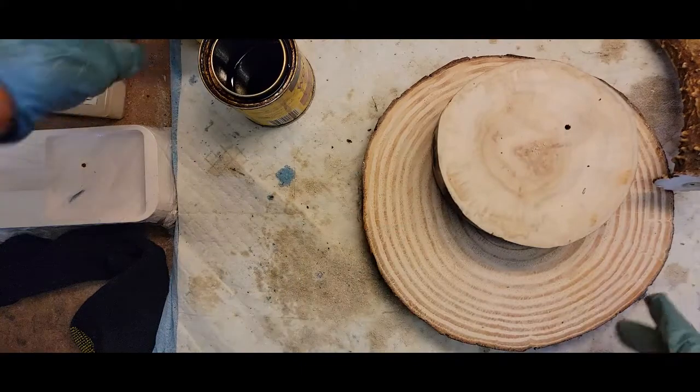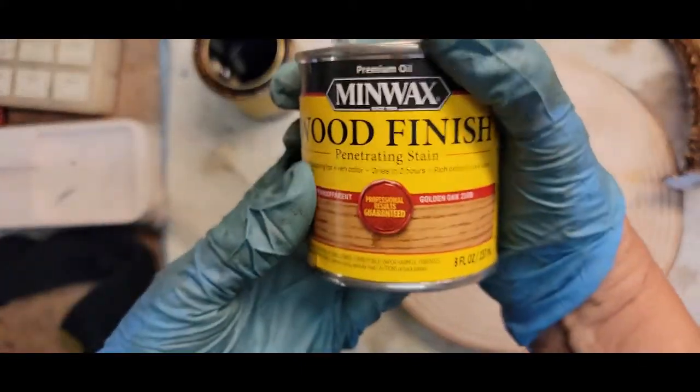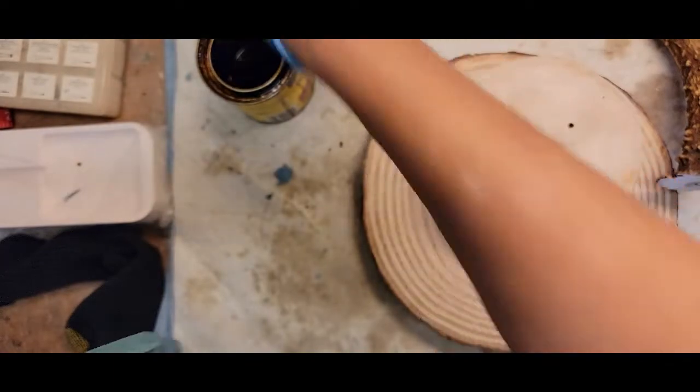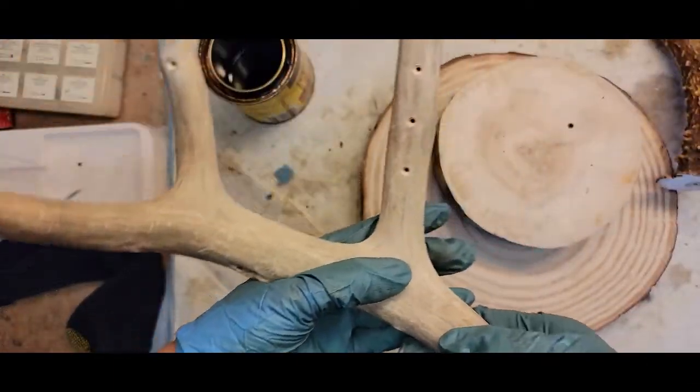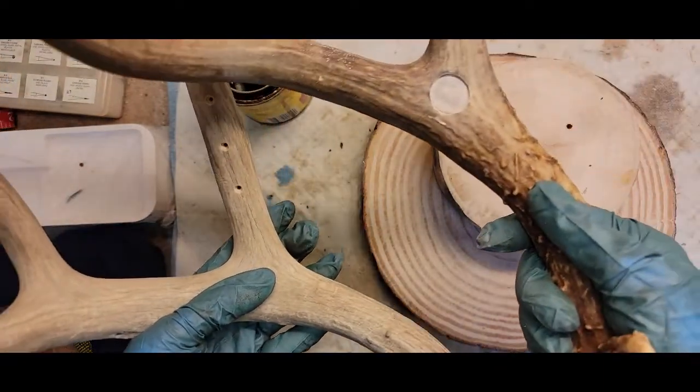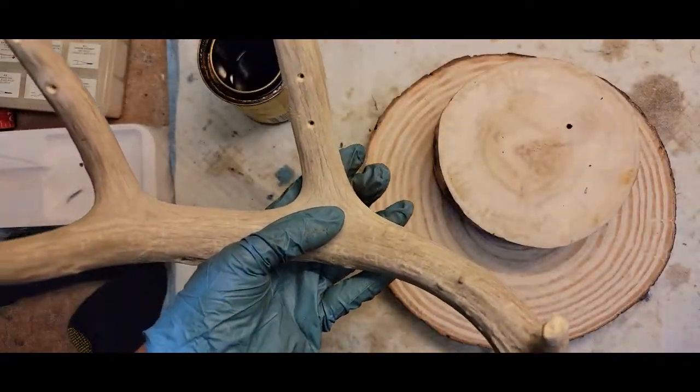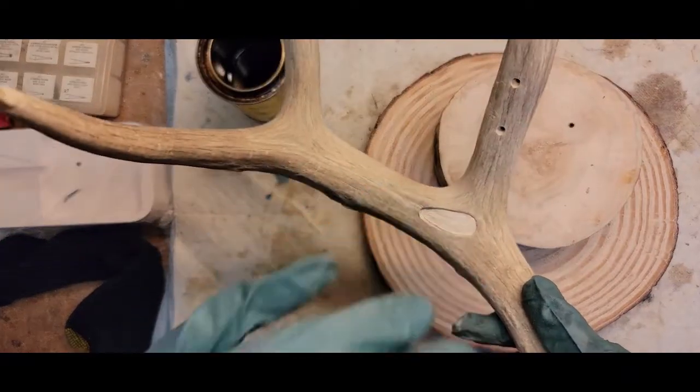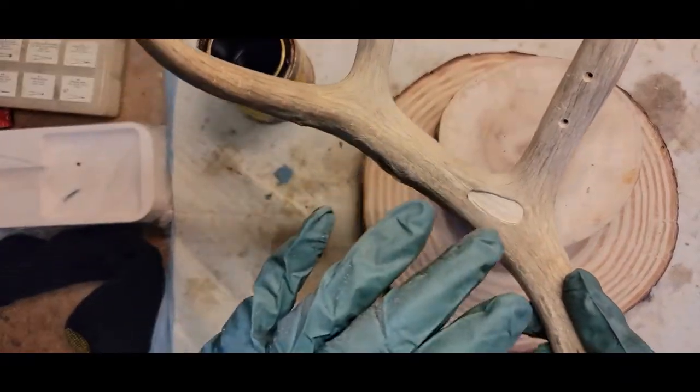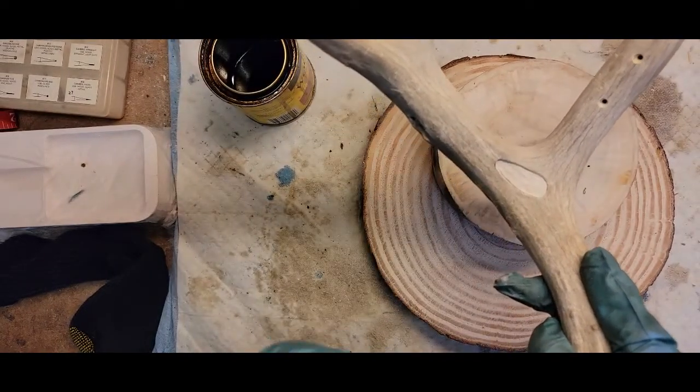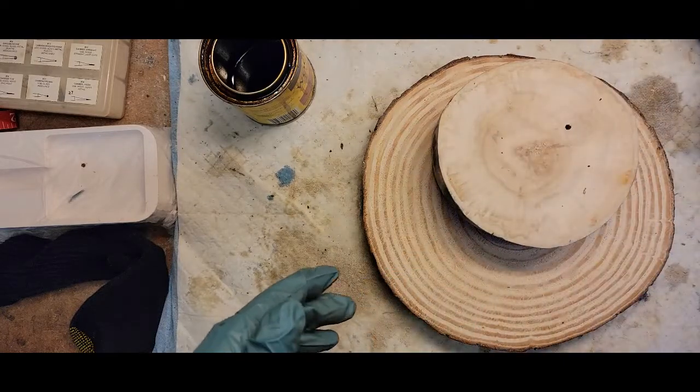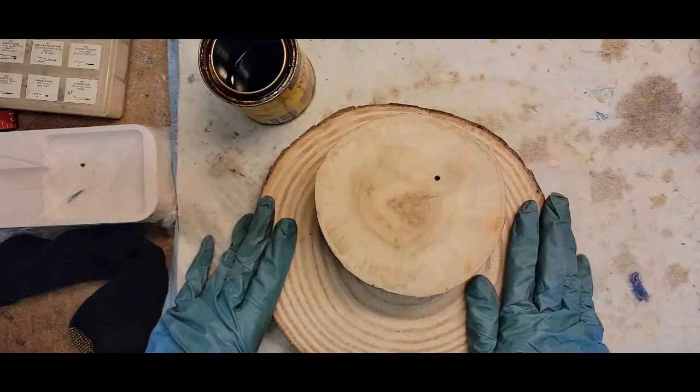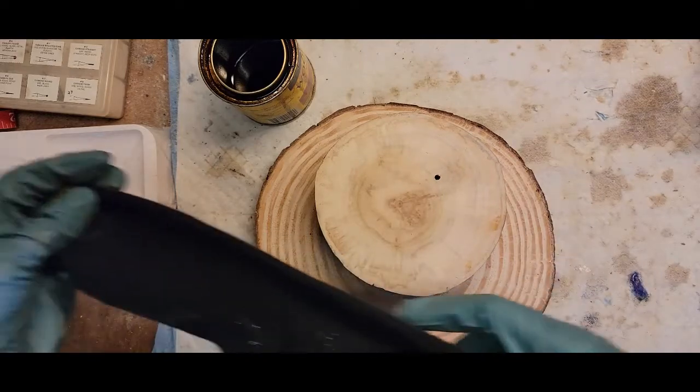What I like to use on antlers is this Minwax golden oak. It brings out more of the natural color. This one's been out in the weather, that's why it's whitened. I must say no animals were hurt in my process of making these stands. Elk and deer drop their antlers annually naturally and grow a new set every year, so none of these animals have been harmed in any way. These were just natural sheds that were found out in the desert.